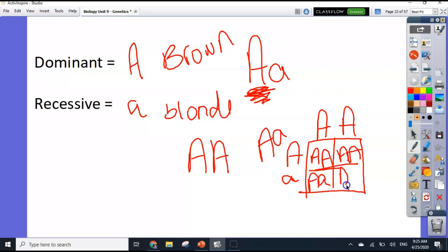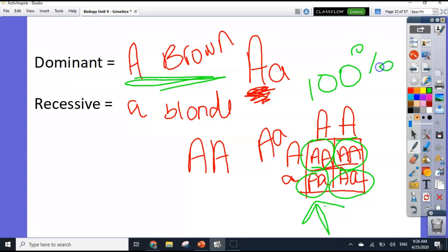So in this case, we see that there are two squares with big A, big A, and two squares with big A, little A. Because all of them have a big A, all of the kids are going to have brown hair, because even at the bottom here, the big A overpowers the little A. So in this case, four out of four kids, 100% of their children would have brown hair. That's what we use Punnett Squares for.